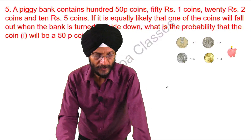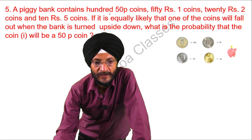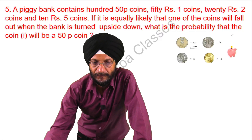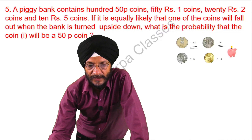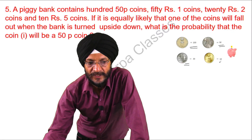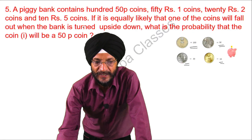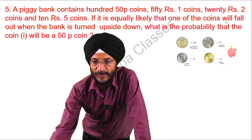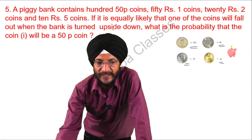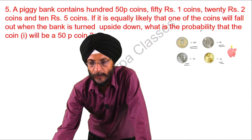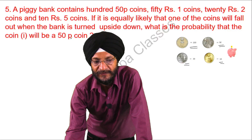The question before us is: a piggy bank contains 150 Paisa coins, 50 one-rupee coins, 20 two-rupee coins, and 10 five-rupee coins. If it is equally likely that one of the coins will fall out when the piggy bank is turned upside down, what is the probability that the coin will be a 50 Paisa coin?